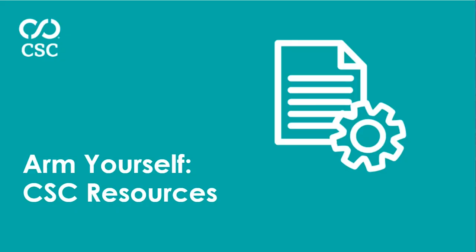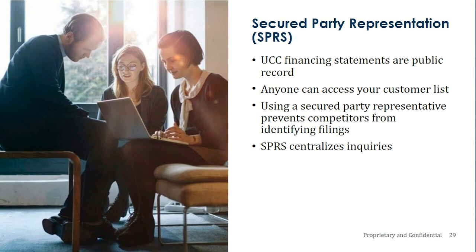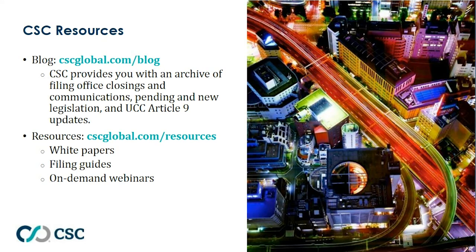Arming yourself with CSC resources. Secured party representation services, also known as SPERS — since UCC financing statements are public record, anyone can access your customer list by running a reverse UCC search. Using a secured party representative like CSC prevents competitors from identifying those filings. SPERS centralizes inquiries, and we have a dedicated team to handle them in a timely manner. Other CSC resources include our blog, which provides an archive of filing office closings, communications, pending and new legislation, and UCC Article 9 updates. Also available are white papers, filing guides, and on-demand webinars on our website.